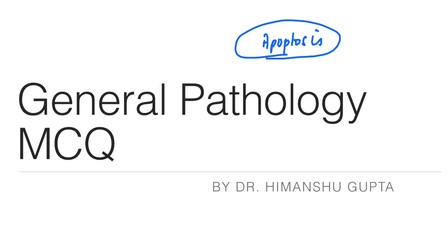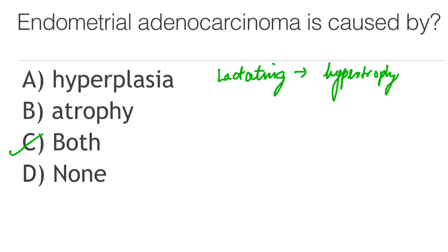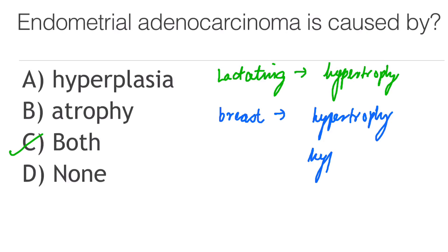Endometrial carcinoma is caused by hyperplasia, atrophy, both, or none — the answer is both. In lactating breast, we see hyperplasia or hypertrophy or both? We see only hypertrophy. In breasts in the pubertal age group, we see hypertrophy or hyperplasia? We see both hypertrophy and hyperplasia.